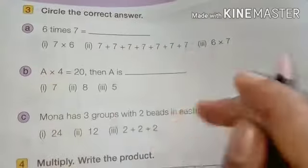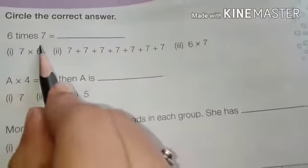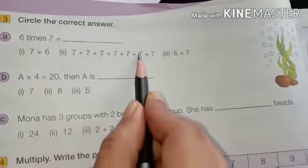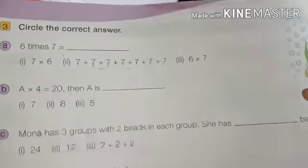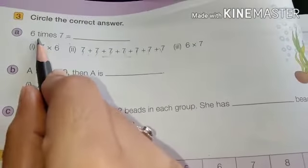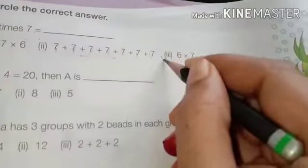Circle the correct answer. 6 times 7. 7 how many times? 1, 2, 3, 4, 5, 6, 7. This is wrong. 6, but here 7's, means here we can do correct answer.